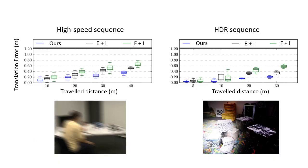We evaluated our pipeline on multiple sequences and compared it against the state-of-the-art pipeline using frames and IMU in green, and one using events and IMU in black. Each of these plots shows the translation error as a function of the travel distance.